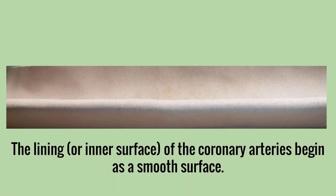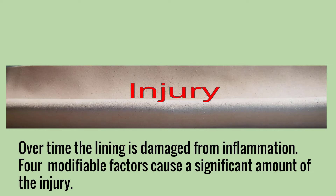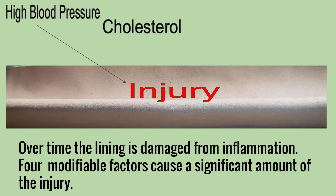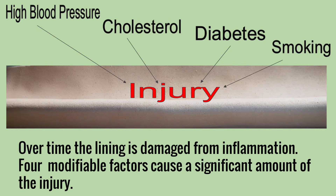The lining or inner surface of the coronary arteries begins as a smooth surface, but over time the lining is damaged from inflammation. Four modifiable factors cause a significant amount of the injury: high blood pressure, cholesterol, diabetes, and smoking. They are modifiable because you can change how much they affect your health by making lifestyle changes and or taking medications.